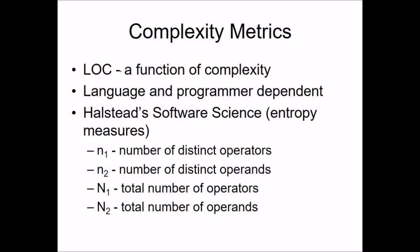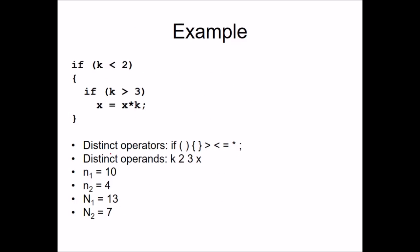Complexity metrics also exist. Lines of code is a function of complexity. Halstead's software science uses an entropy measure. The variables are: n1 = number of distinct operators, n2 = number of distinct operands, N1 = total number of operators, N2 = total number of operands. For example, consider a code snippet: if k is less than 2, and an inner if k is greater than 3, then x equals x times some value.